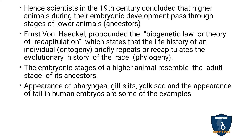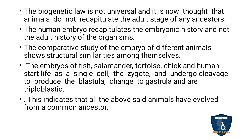The embryonic stages of higher animals resemble the adult stages of their ancestors — meaning the lower animals' adult stage is resembled by the higher animals' embryonic developmental stages. The appearance of pharyngeal gill slits, yolk sac, and a tail in human embryos are some of the examples.